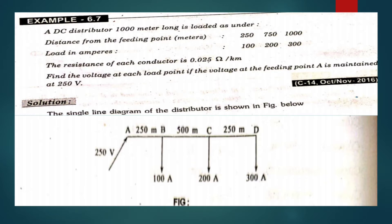The distance from the feeding point — here we have a feeding point with supply. At 250 meters we have a load of 100 amps. That is 250 meters distance with 100 amps of current flowing here.